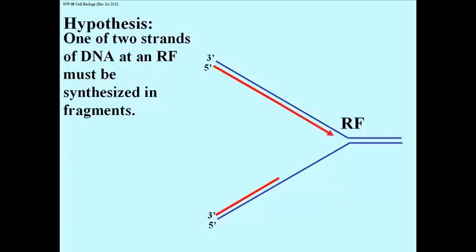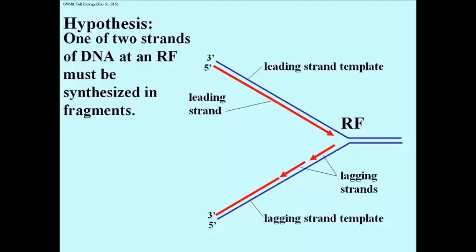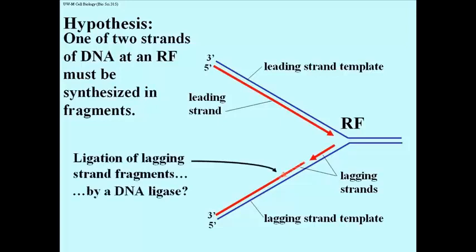Here is our replication fork modeling continuous synthesis of one strand of DNA in the 5' to 3' direction towards a replication fork, and the replication of fragments of DNA, also 5' to 3' but extending away from the replication fork. The strand made continuously is called the leading strand, while the strand made in pieces is called the lagging strand, in part because its synthesis is slowed down by the need to put the pieces together. The enzyme that stitches the fragments together is a DNA ligase.